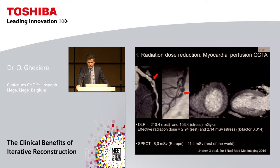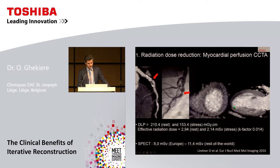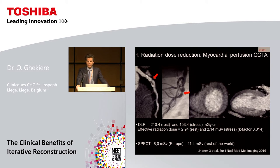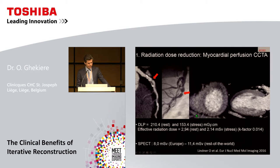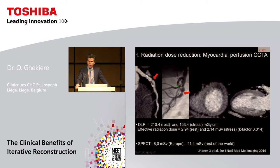Another clinical example is stress perfusion myocardial CT. At rest CT there is a 60-70% stenosis of the proximal LAD, confirmed at invasive coronary angiography. The stress myocardial perfusion CT shows a hypodense subendocardial zone in the mid to apical third of the left ventricle myocardium, indicating myocardial ischemia, confirmed with an invasive FFR measurement of 0.75. The effective radiation dose of both rest and stress cardiac CT was around 5 mSv — less than the 8 mSv reported in Europe and 11 mSv in the rest of the world. With cardiac CT, we have both morphological and hemodynamical information.